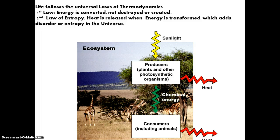So life basically follows those universal laws of thermodynamics. The first law is where energy is converted, not destroyed or created. And the second law of entropy is where heat is released when energy is transformed, which adds to disorder or entropy in the universe. Which means that any time energy is transformed from one form to another, like light to chemical, you always lose some of that energy as heat. And that heat energy increases the disorder in the universe. So in life, energy is required and is highly ordered.